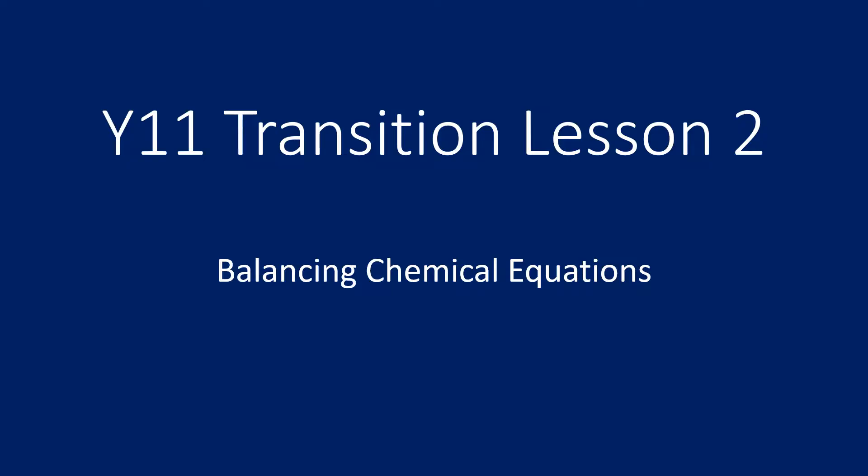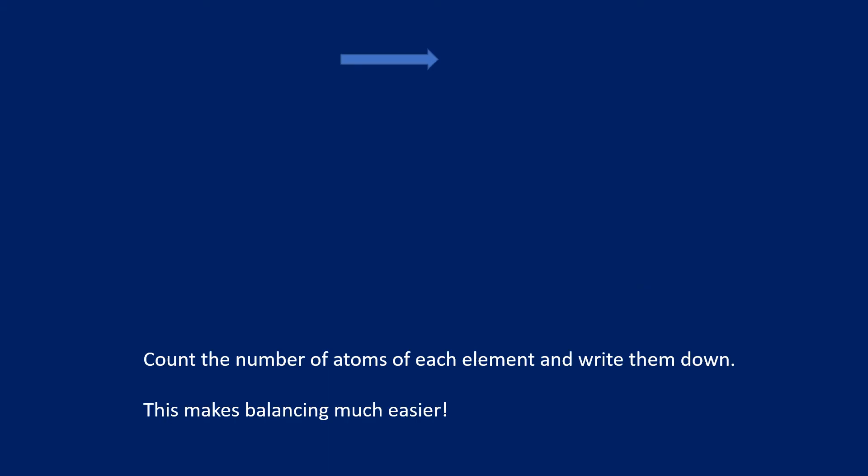So this video is lesson two in the transition series from Year 11 GCSE into A-level chemistry, and it's going to focus on balancing chemical equations — a very important skill that we must have at A-level. Let's get straight into an example.